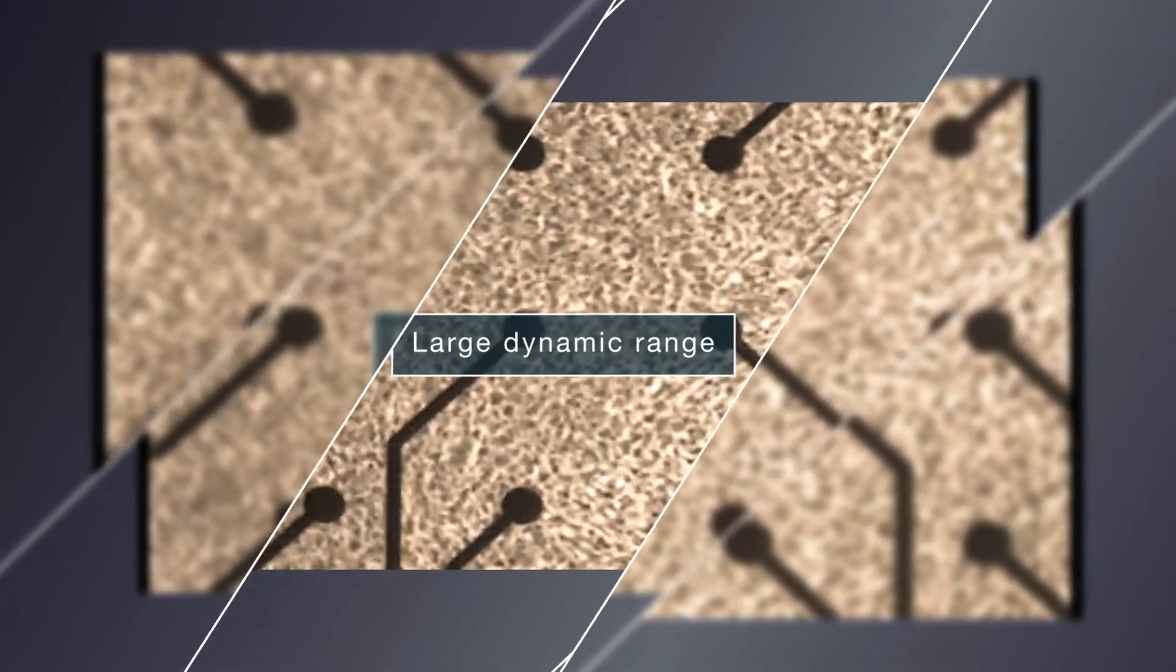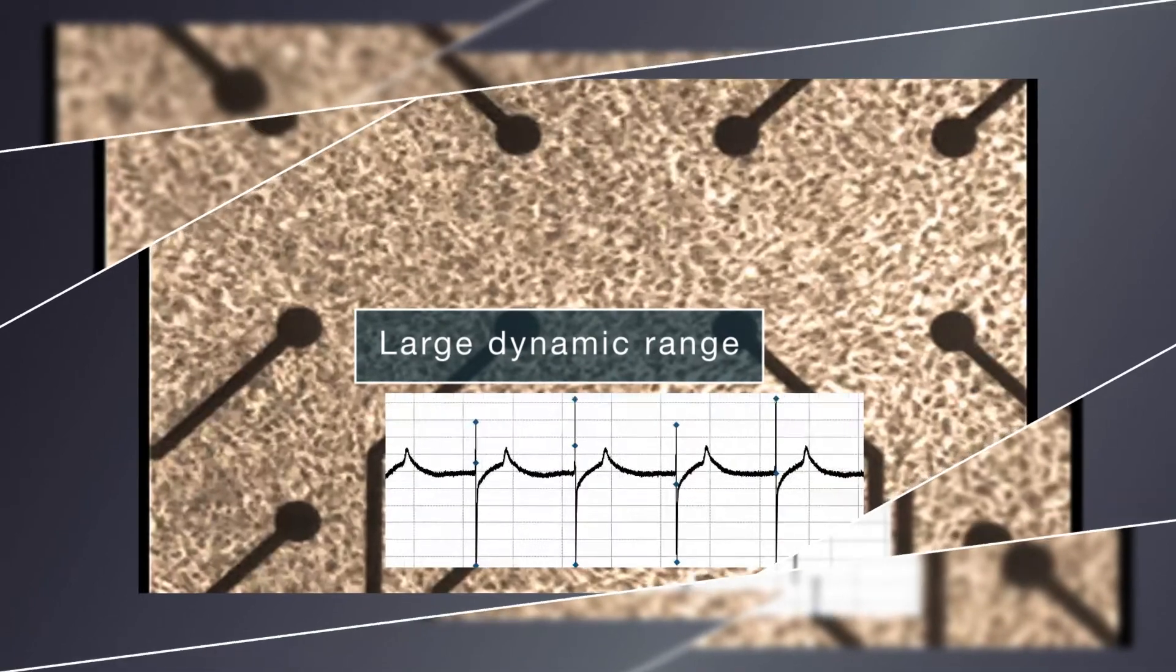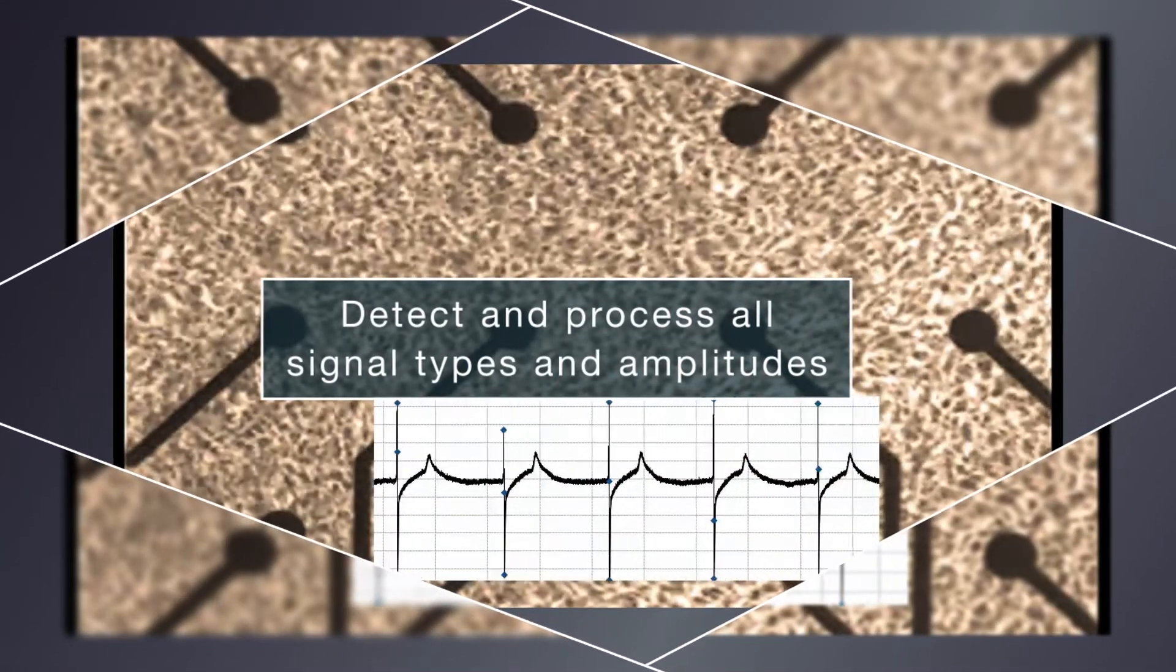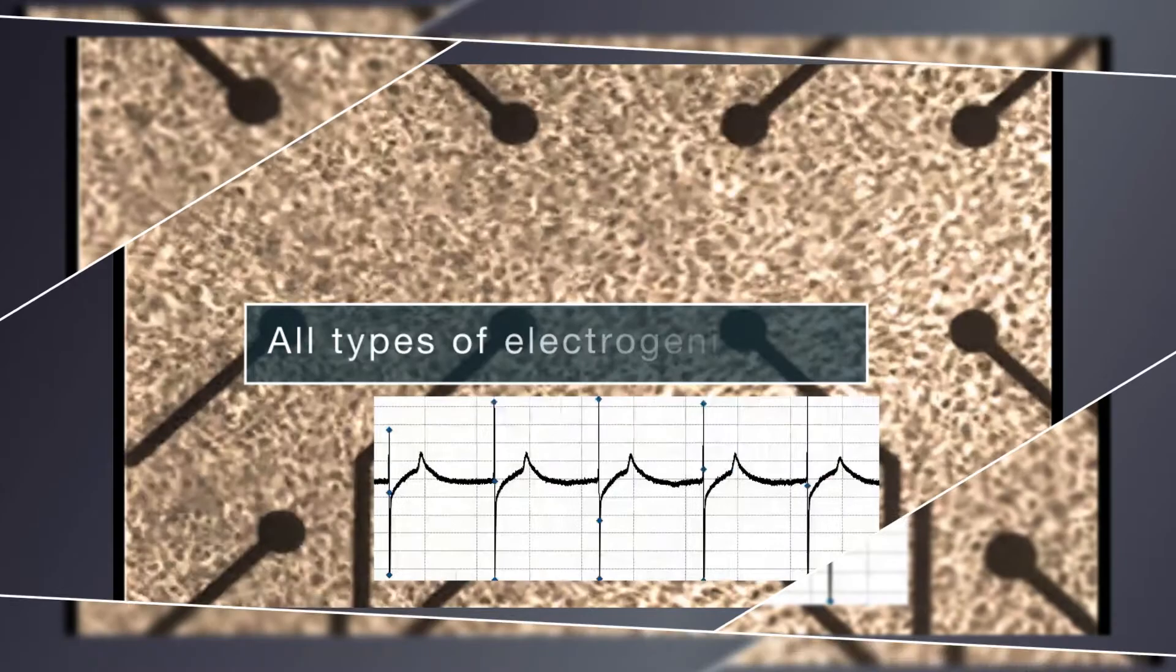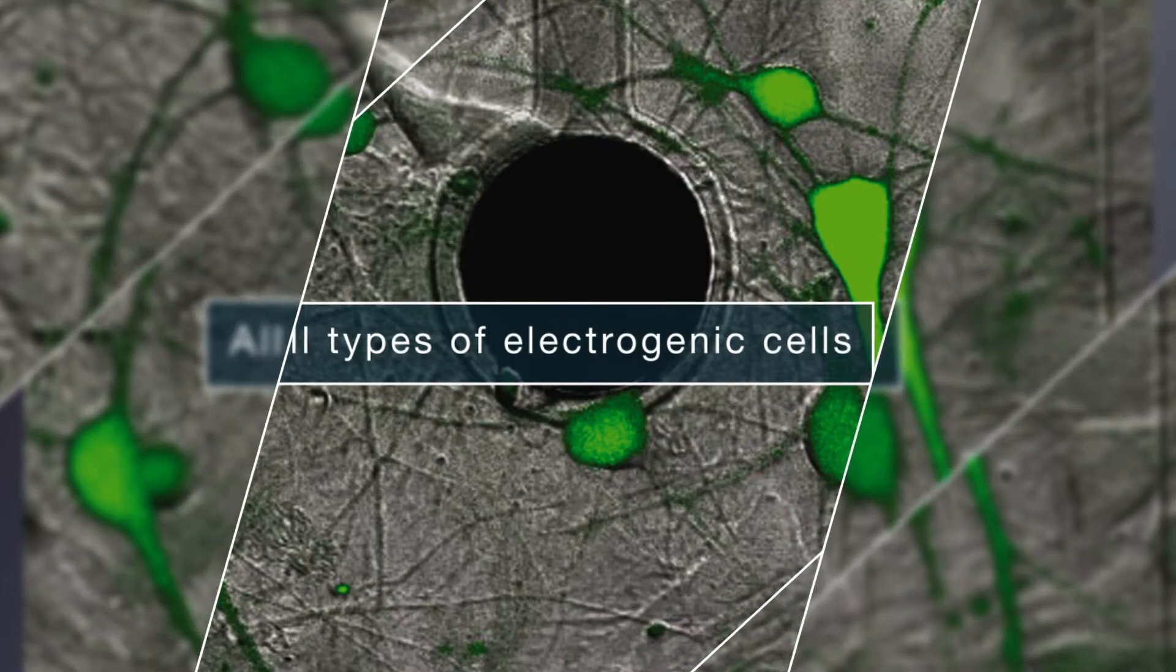That's why the amplifiers for Multi-Channel Systems come with a large dynamic range and bandwidth to detect and process all signal types and amplitudes from most diverse preparations. In other words, you will not miss or clip a thing.